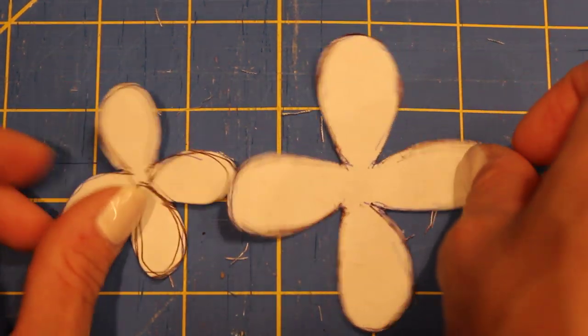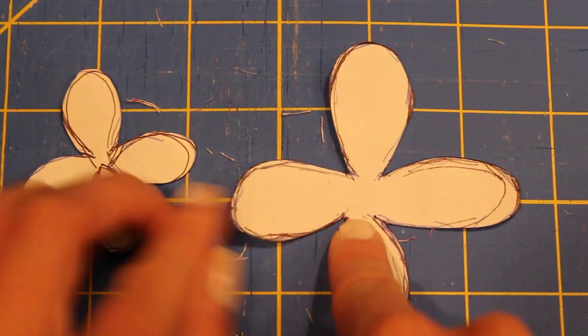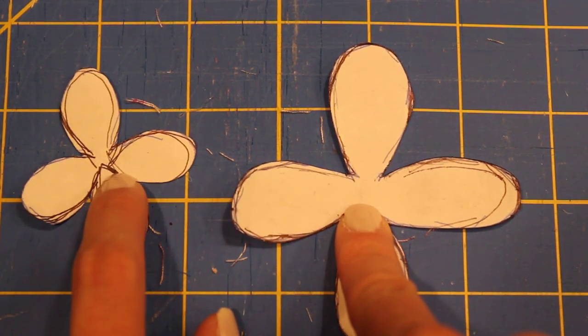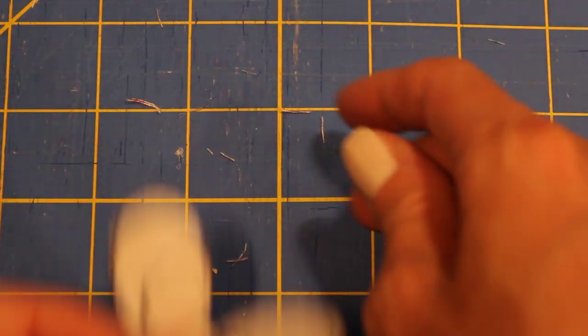Then what you're going to do is trace 10 of the larger ones on fabric, and then trace two of the smaller ones. After you cut those out,